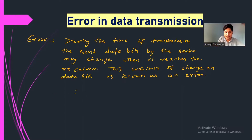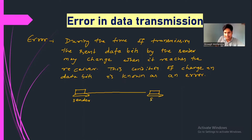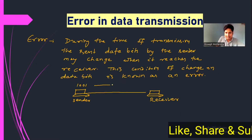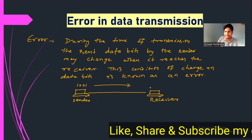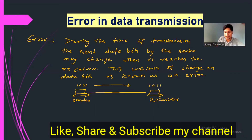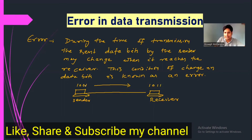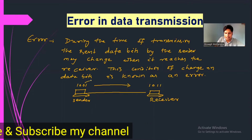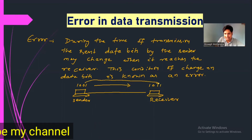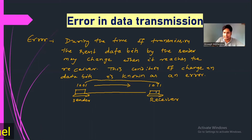Suppose a sender sends some data bits or a message to the receiver. Suppose this is a sender and this is a receiver. Sender sends data bits 1001 and this data is transmitted over the network, and when it reaches the receiver, the receiver receives 1011. You can see that one bit of the sent data word has been changed — the third bit that was sent as zero has become one.